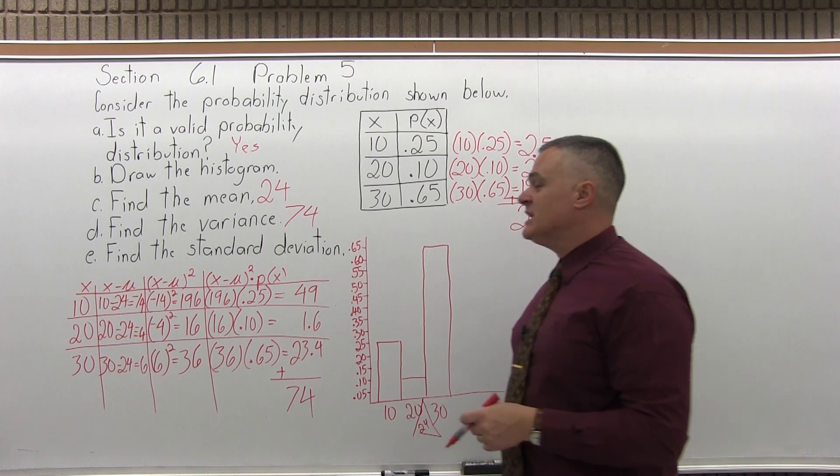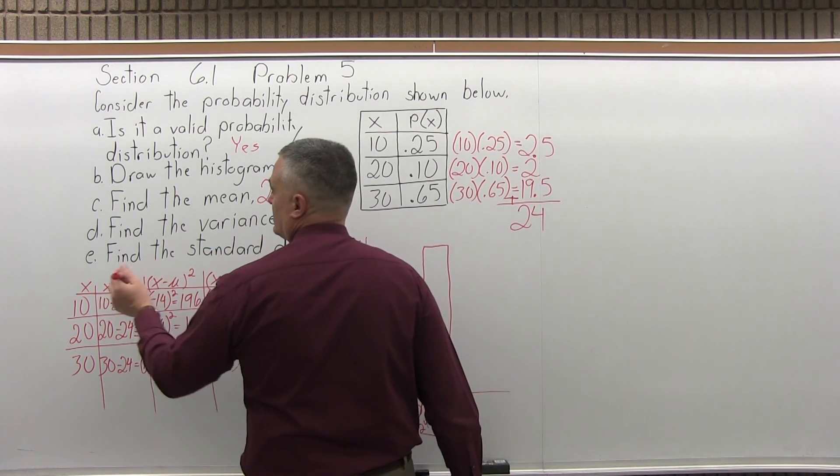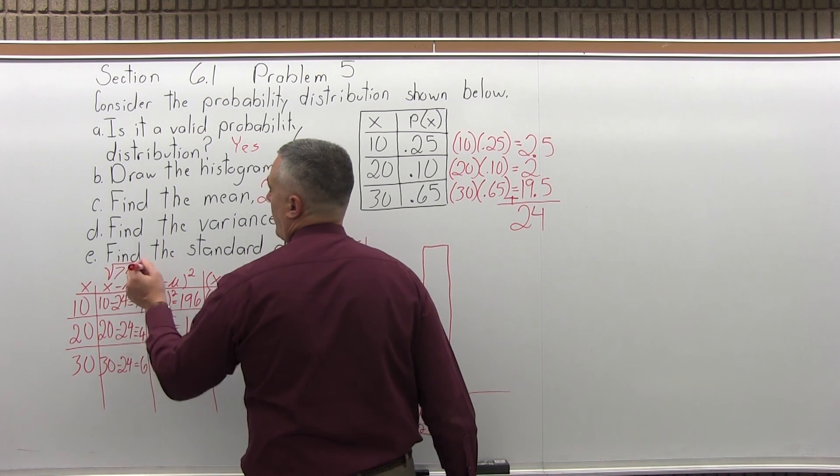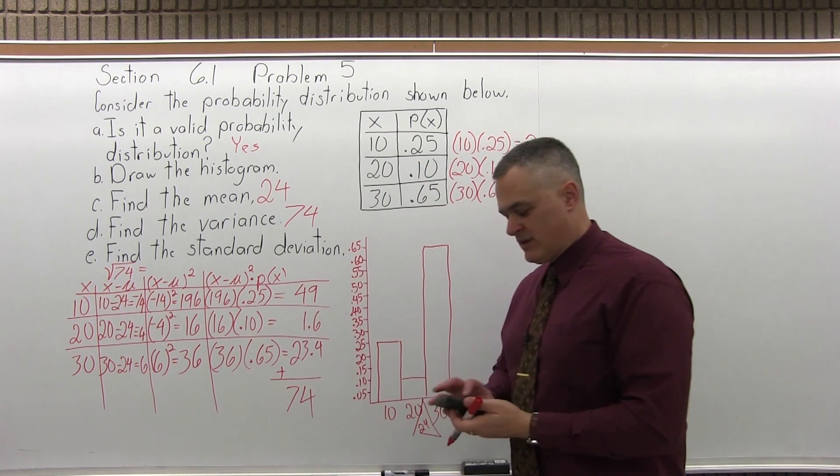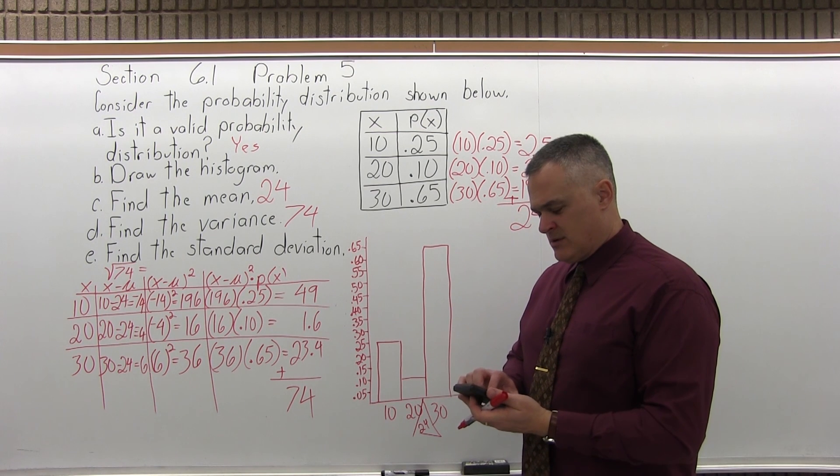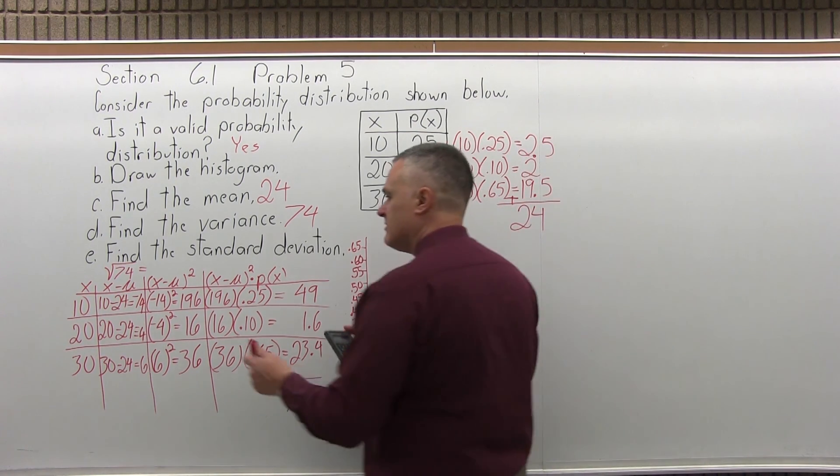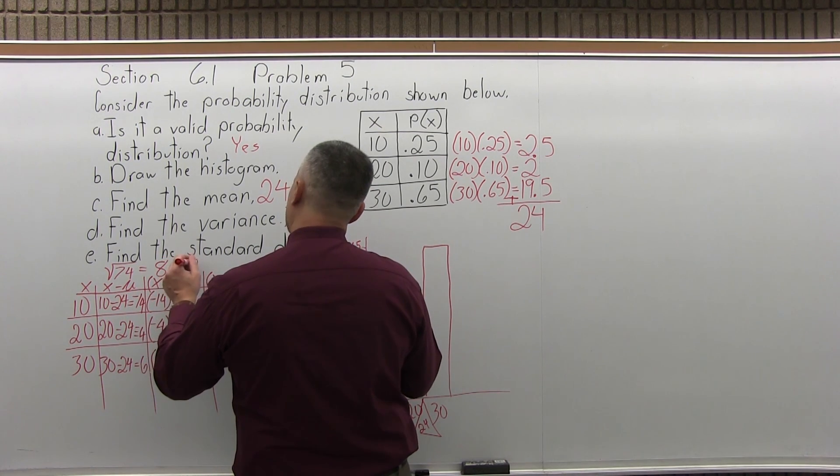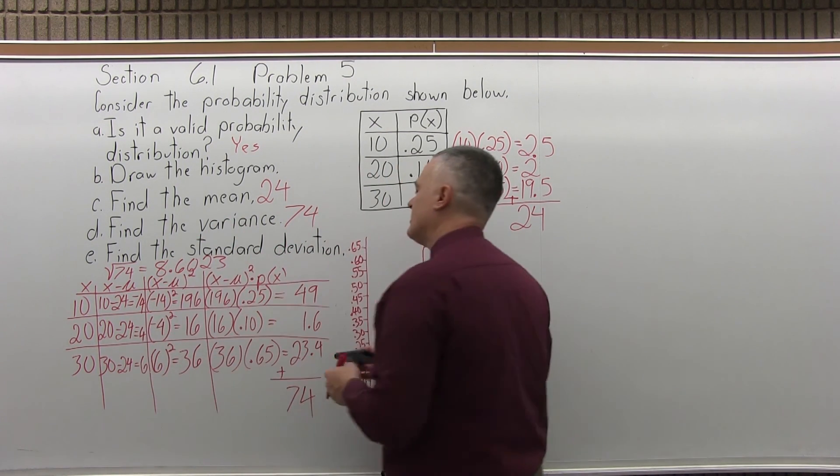And finally the last part, the standard deviation. Standard deviation will be the square root of whatever the variance was. Square root of 74. I'll let the calculator do that for me. Let's see. 8.6023. And it goes on to the end of the screen. A little more than 8.6 is the standard deviation.